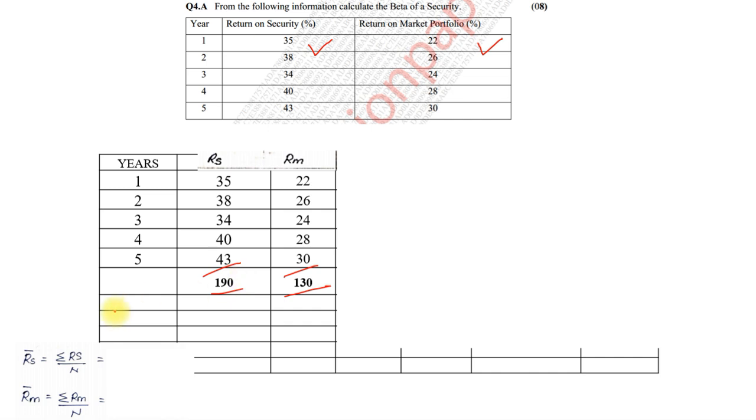So, for that, basically, we need to find the average. So, RS bar, that is 190 divided by 5, and RM bar, which is 130 divided by 5. So, we got it at 38 and 26.